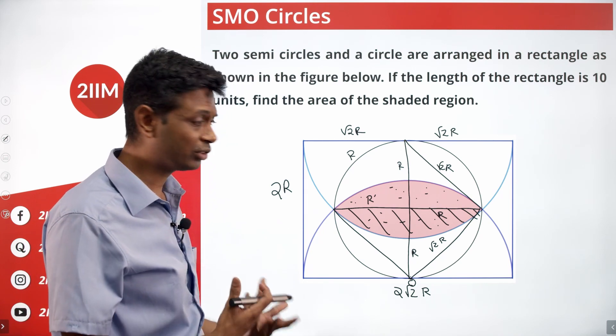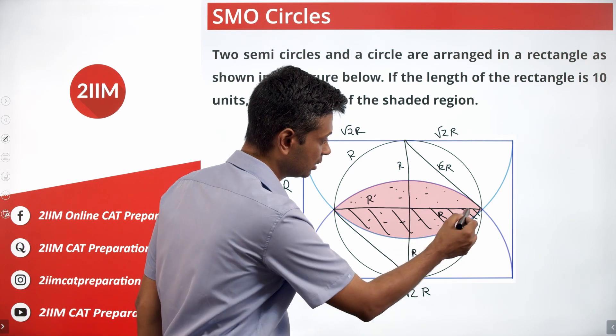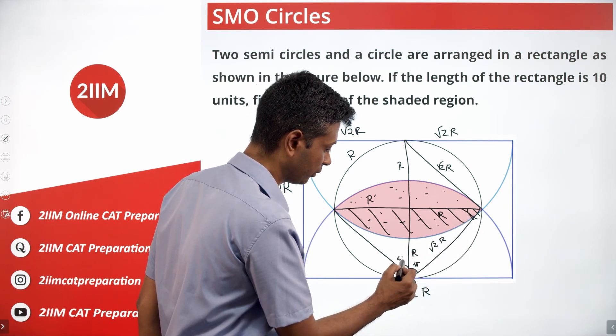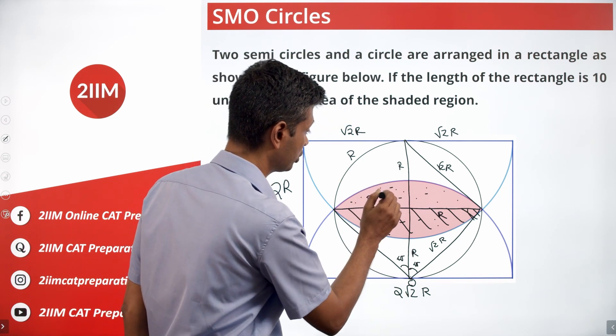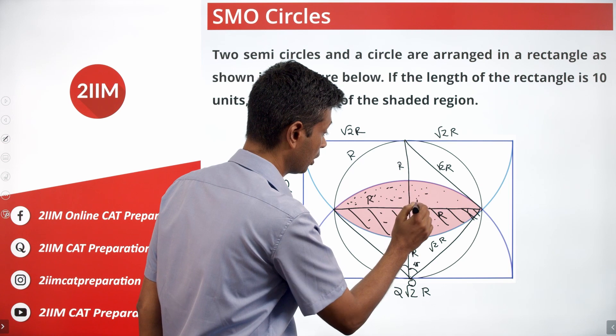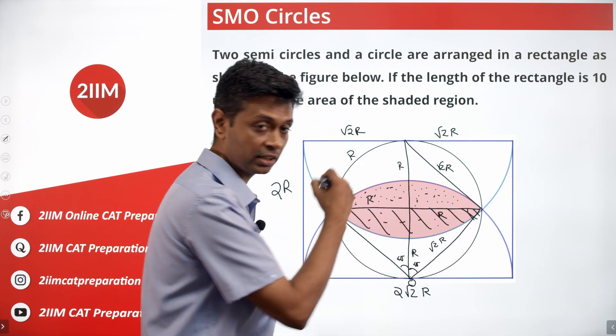The beauty of this is the numbers are very friendly. So this is root 2R, this is R and R. This is 45, this is 45, this is 45. So area of this thing, which I am shading with dots, we're imagining that as area of sector minus area of triangle.